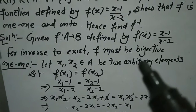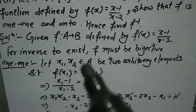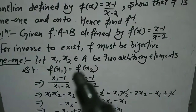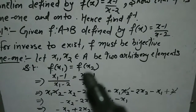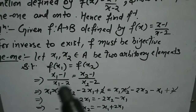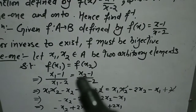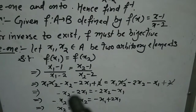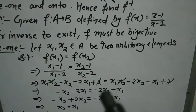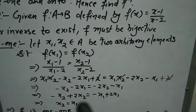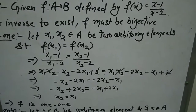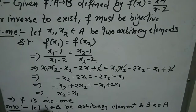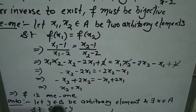For one-one: Let x₁, x₂ belong to A be two arbitrary elements such that f(x₁) = f(x₂). Then (x₁-1)/(x₁-2) = (x₂-1)/(x₂-2). Cross multiplying and cancelling terms, we get -x₂ - 2x₁ = -2x₂ - x₁. Collecting x₂ terms on one side and x₁ terms on the other, we get x₁ = x₂. So the different elements with the same images turned out to be the same — f is one-one.